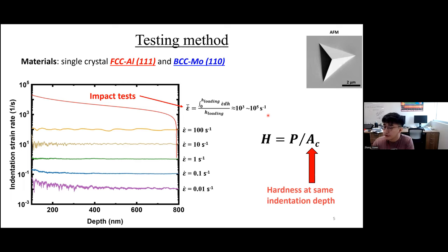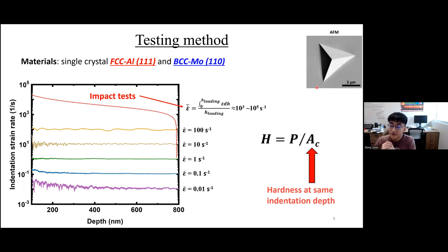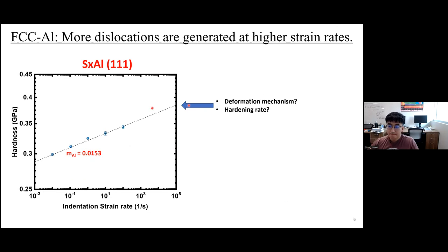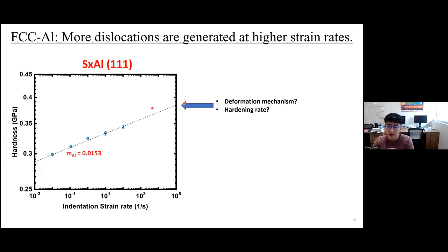To measure material response at higher strain rates, we measured hardness evolution with increasing strain rate. We use the most traditional definition of hardness — peak load divided by the contact area measured after the test by AFM. To filter out indentation size effects, we terminate all tests at the same indentation depth. In single crystal aluminum, hardness maintains a linear trend in log-log scale at lower strain rates. However, the hardness from impact tests shows a deviation from this trend line, suggesting the deformation mechanism may change or the hardening rate increases at higher strain rates.